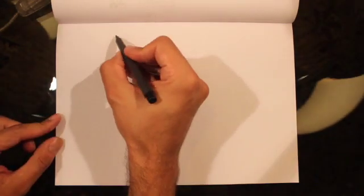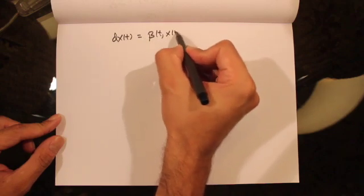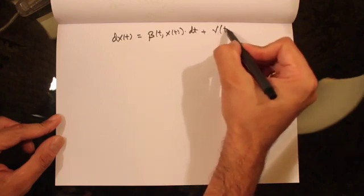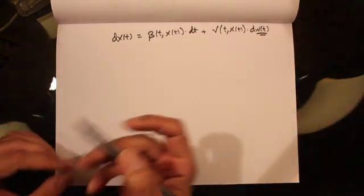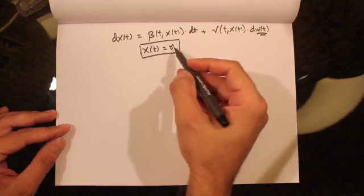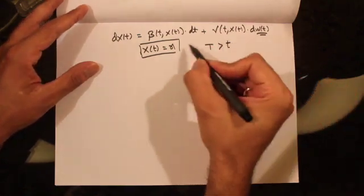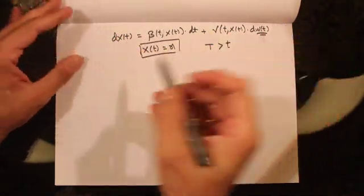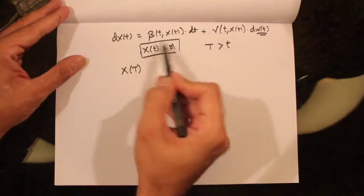In the previous lecture we talked about stochastic differential equations. The SDE takes the form dx(t) = beta(t, x(t)) dt + gamma(t, x(t)) dW(t), where W(t) is a random Brownian motion. We are also given an initial condition x(t) = x, meaning the value of the process at time t equals x. Assuming capital T is greater than small t, solving the differential equation means finding the process x(T) that satisfies this SDE with the given initial condition.